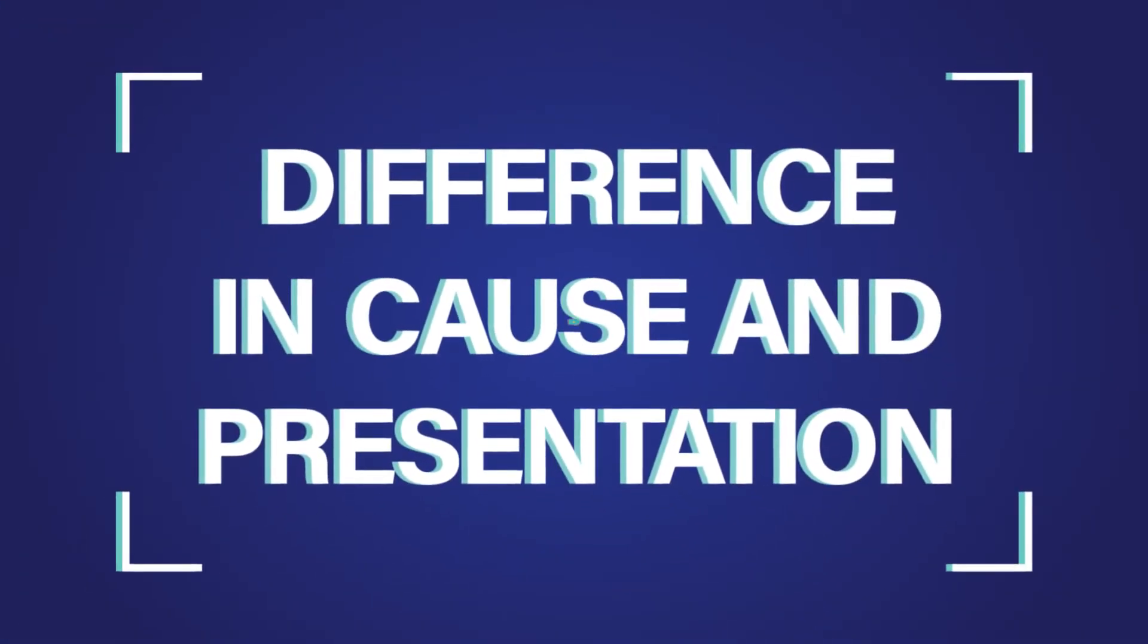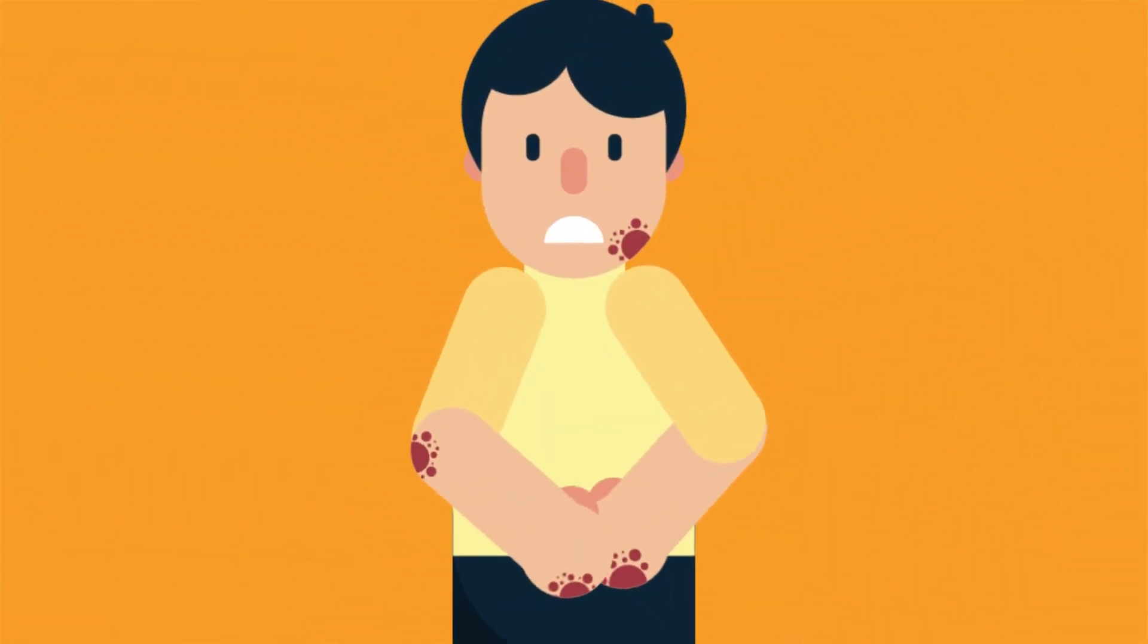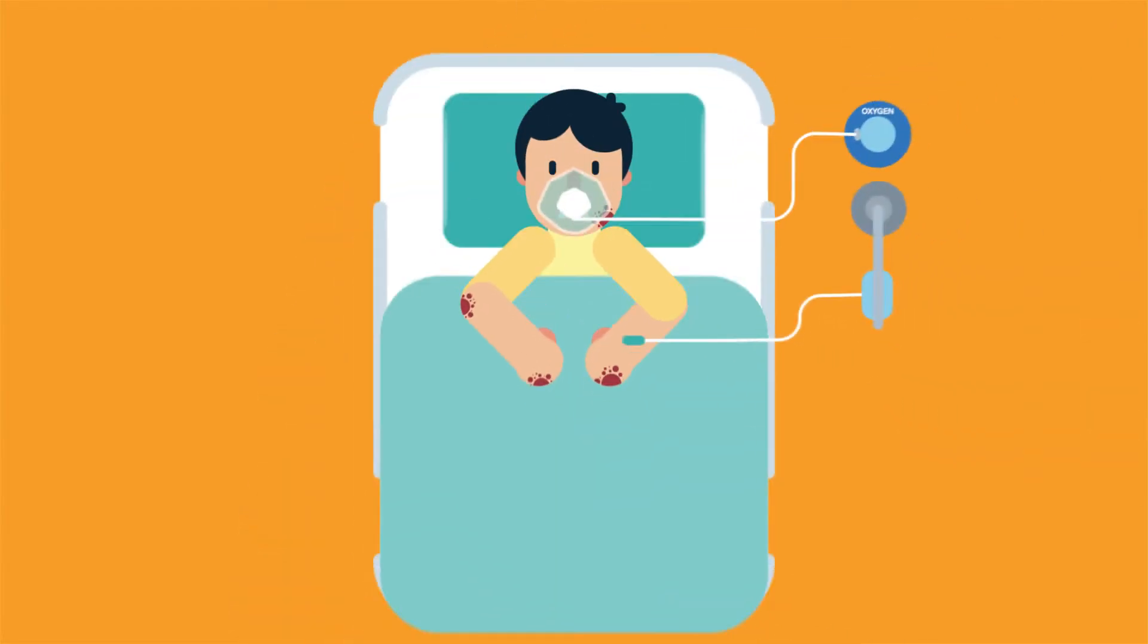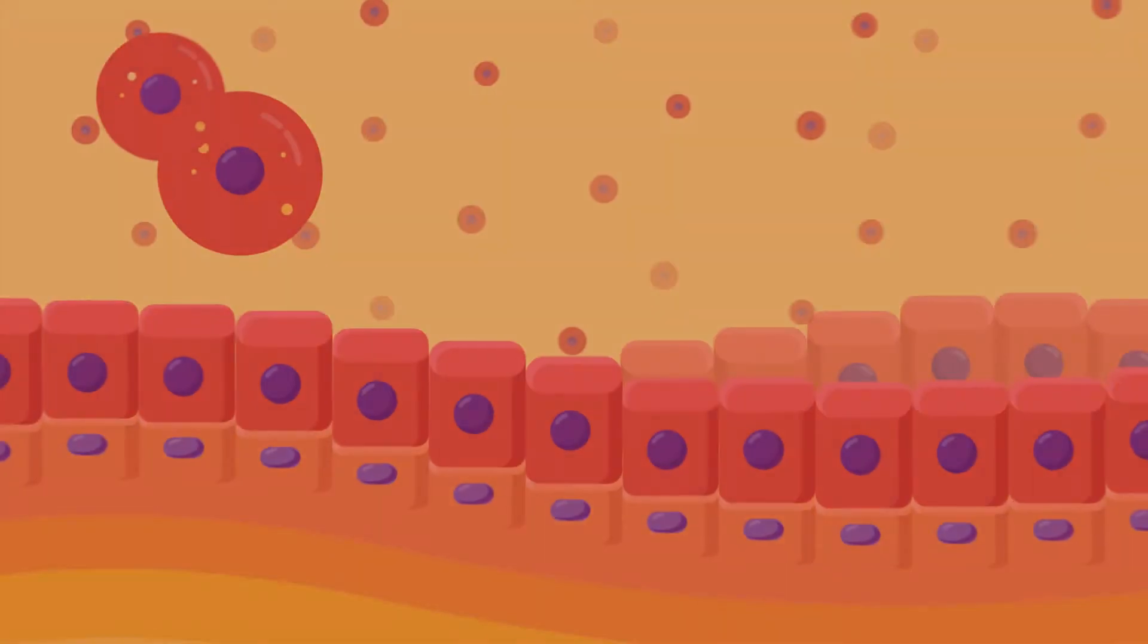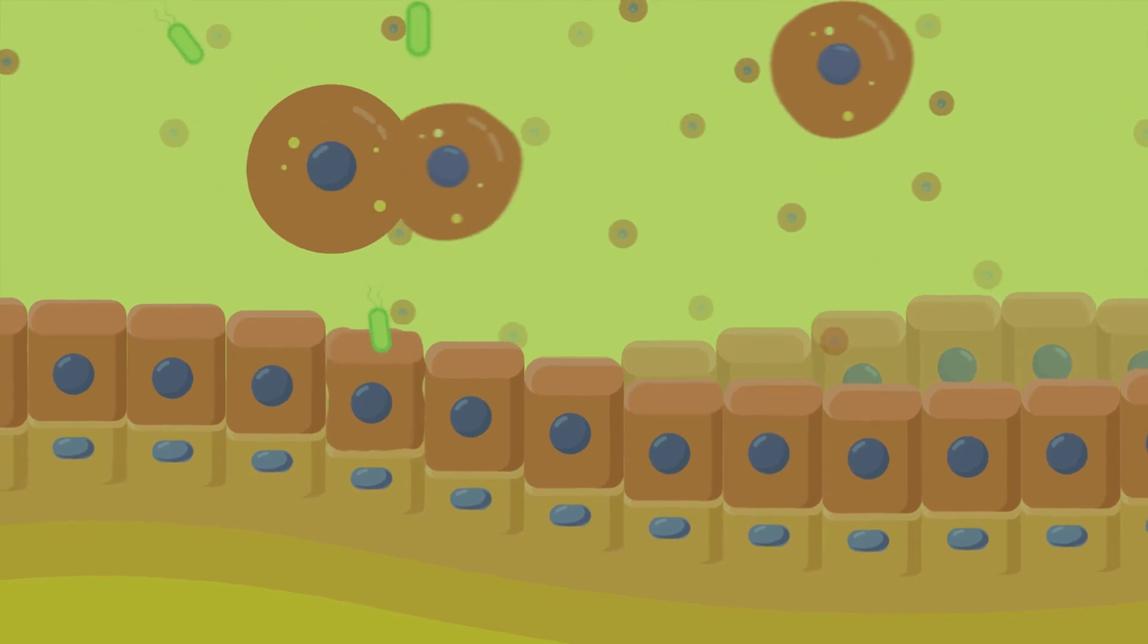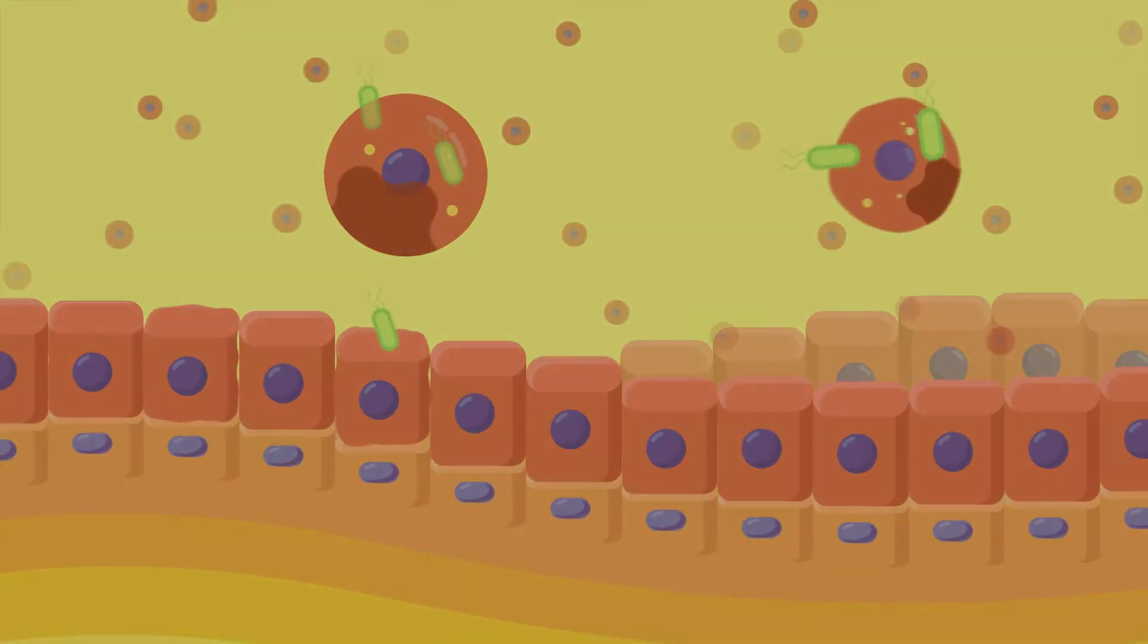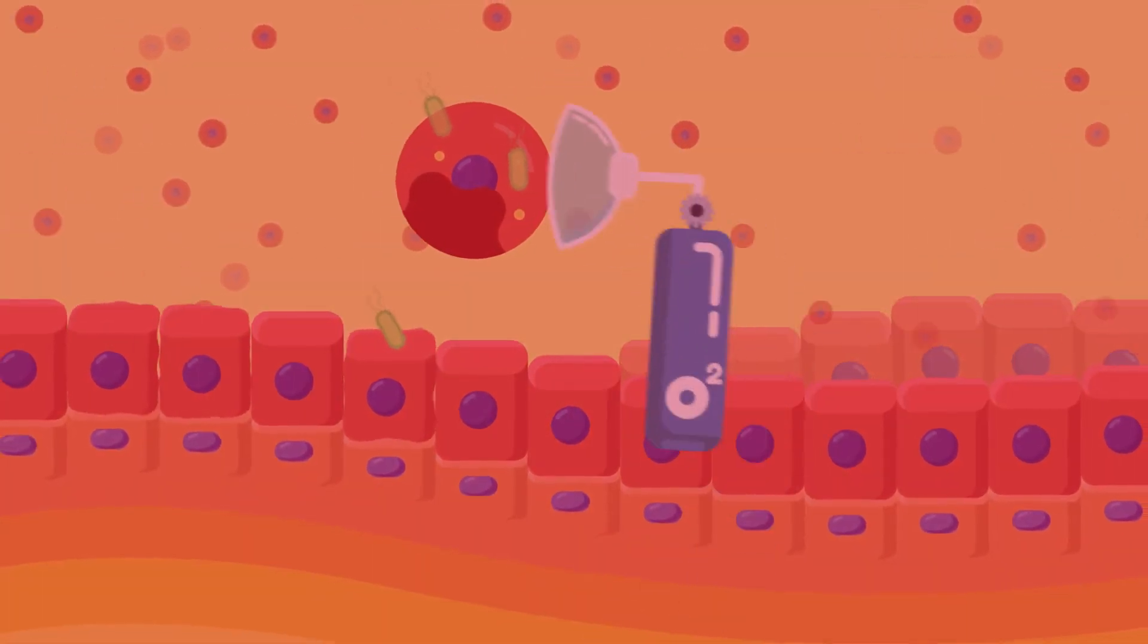Difference in cause and presentation. Necrosis is a pathological process which is detrimental to the body. It occurs when the cells are exposed to toxins or on exposure to extreme conditions, which could be anything from increased temperature, decreased oxygen levels, etc.